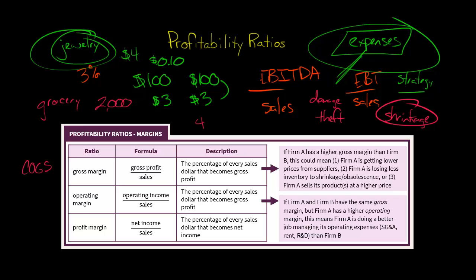We want to compare gross margin in two ways. First, look at a company's gross margin over time — we'd love to see an upward trend. If it's going down, we question why: maybe competition has entered and prices have been reduced, or the company is struggling with inventory management. Then we want to compare the gross margin to that of competitors. Now, for operating margin, we take operating income — which is gross profit minus operating expenses like SG&A and R&D — divided by sales.